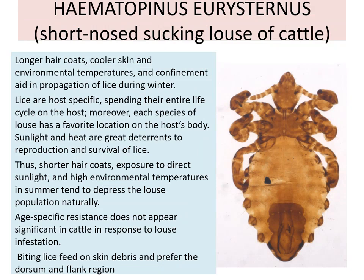Longer hair coats, cooler skin and environmental temperature, and confinement aid in propagation of lice during the winter. Lice are host-specific, spending their entire life cycle on the host. Each species of louse has a favorite location on the host body. Sunlight and heat are a great deterrent to reproduction and survival of lice. Thus, shorter hair coat, exposure to direct sunlight and high environmental temperature in summer tend to depress the louse population naturally.